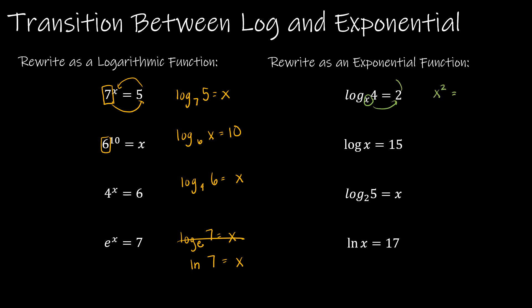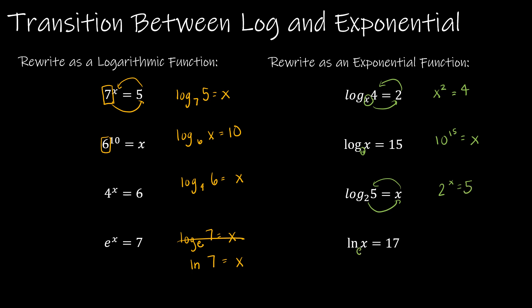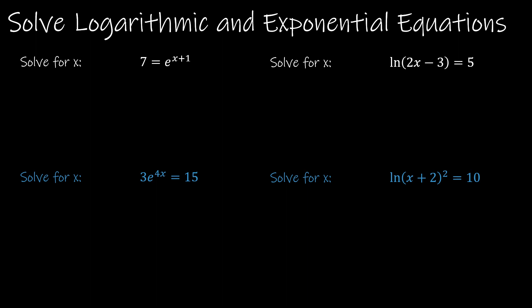Going in reverse from logarithmic to exponential: x squared equals 4 — just rewrite it as the exponential form; log base x of 4 equals 2 checks out. For log with no base, the base is 10 (common log), so log of x equals 15 becomes 10 to the 15th equals x. Log base 2 of 5 equals x becomes 2 to the x equals 5. Since natural log has base e, the natural log of x equals 17 becomes e to the 17th equals x.